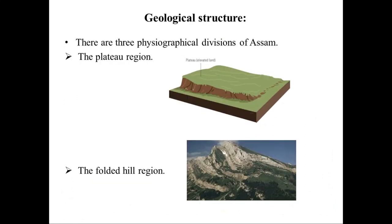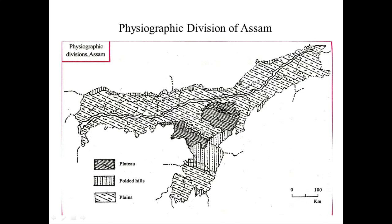A plateau is an elevated plane — elevated land surrounded by plains. The slope of a plateau is not very sharp compared to folded hills. Plateaus are formed due to tectonic movements, volcanic activities, or erosion by rivers. West Karbi Anglong and East Karbi Anglong are the districts that fall under the plateau category.